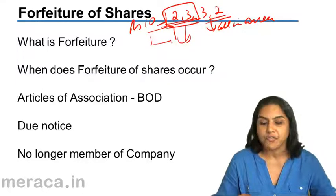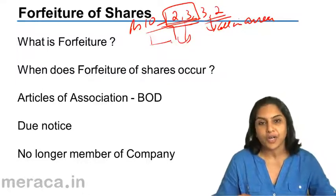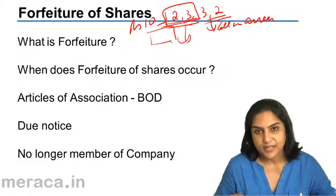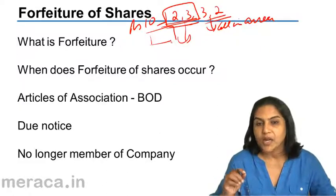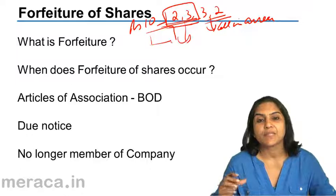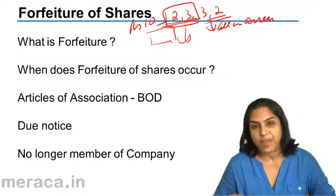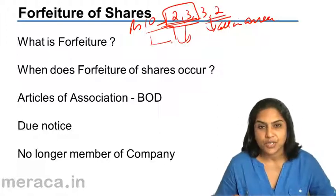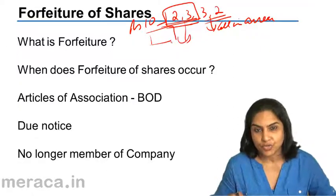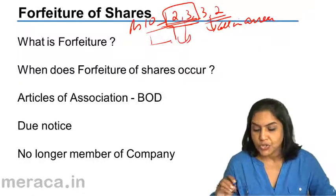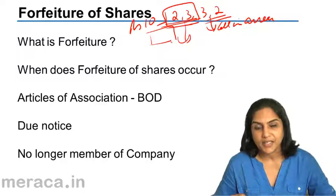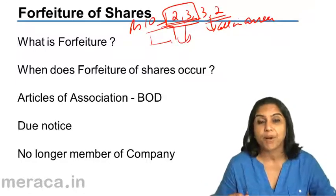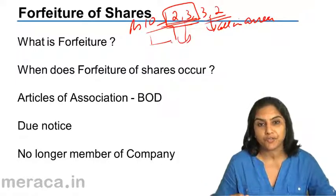When does forfeiture of a share occur? Forfeiture occurs when there are calls in arrears — when a call has been made but some shareholders do not pay up this money. In such a situation, the articles of association usually give the board of directors the power to forfeit shares.